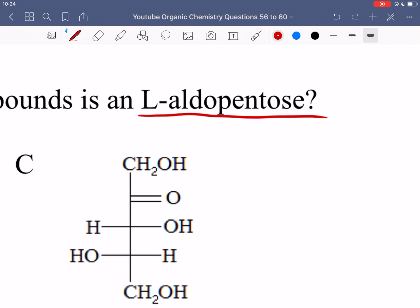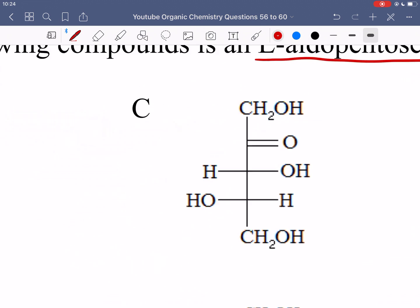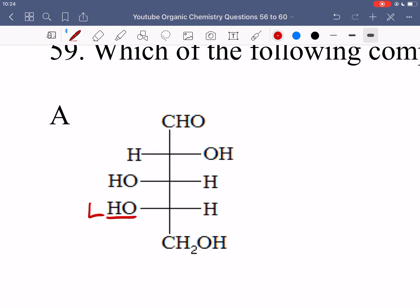But then we're also told that it's an aldopentose. So pentose, that pent part, means that there are 5 carbons in the chain, and then the aldo tells us that it's an aldehyde. And we see an aldehyde here, and we do see 5 carbons, so A is our correct answer.